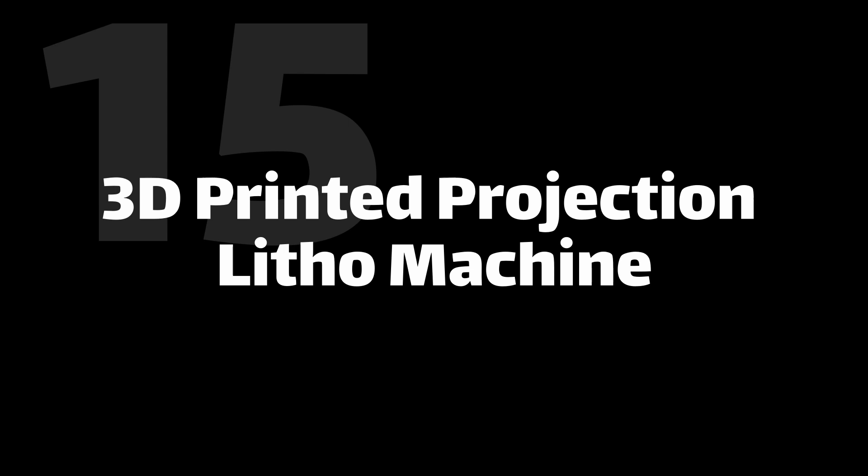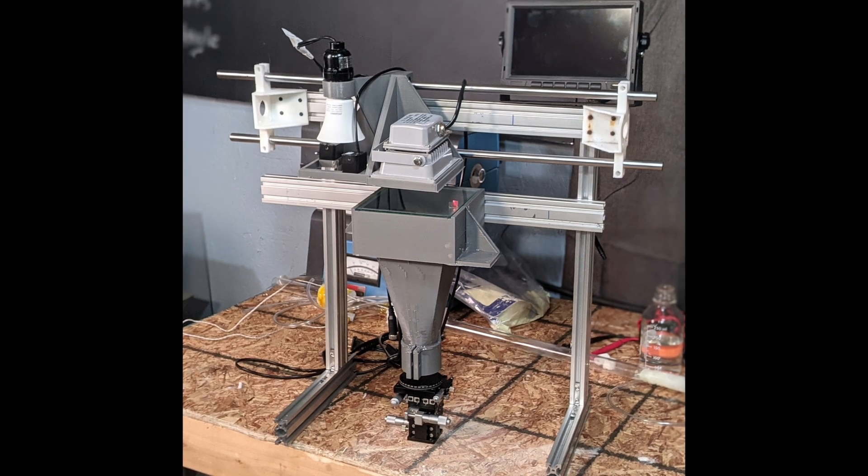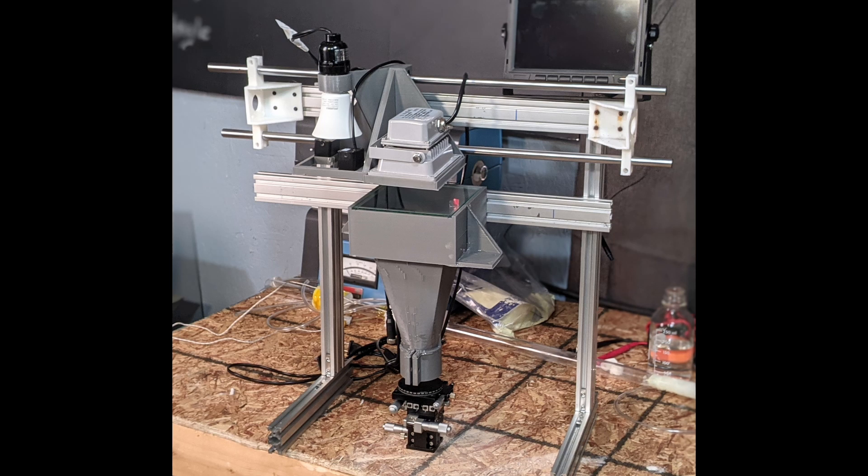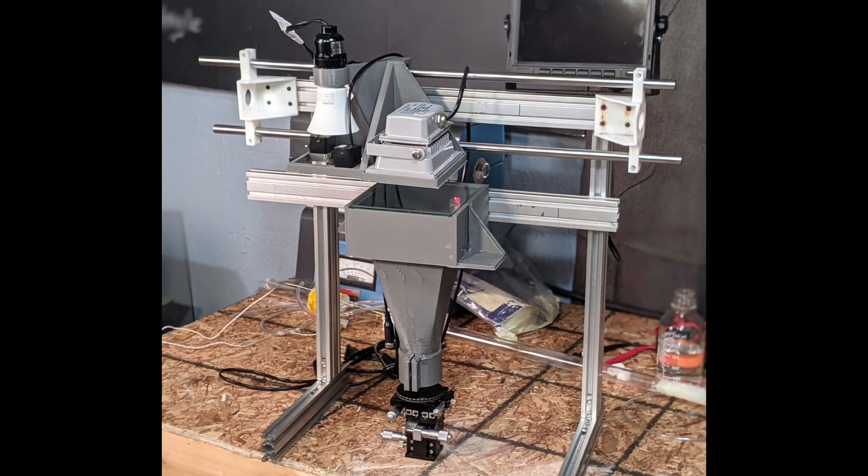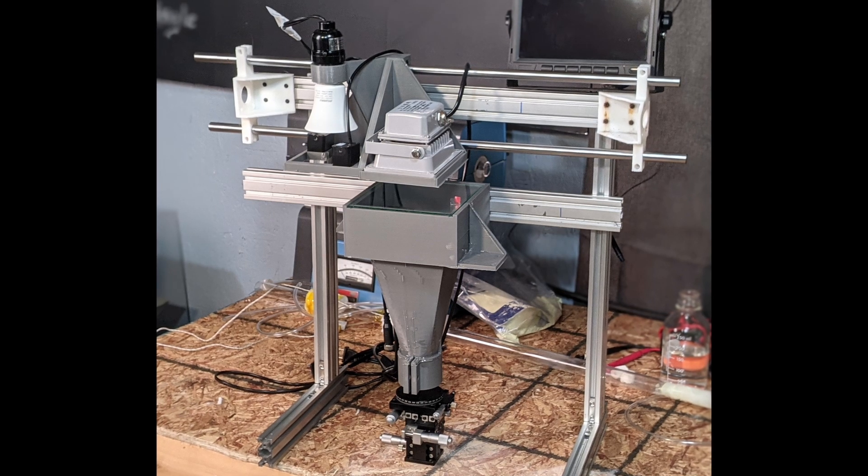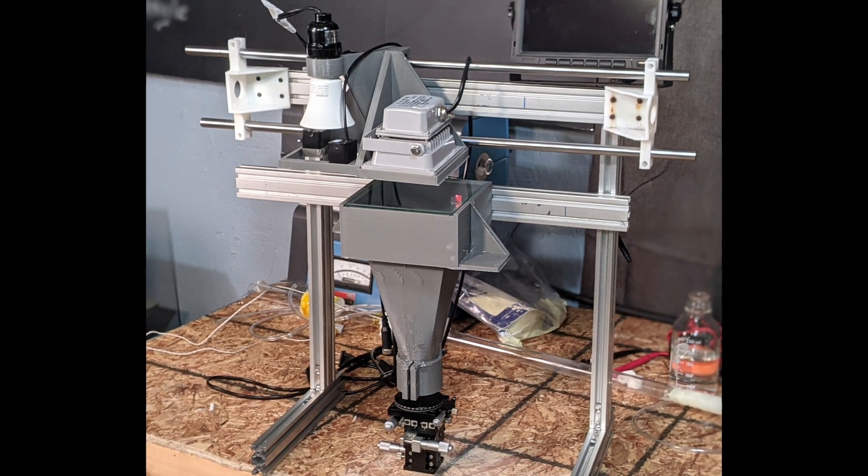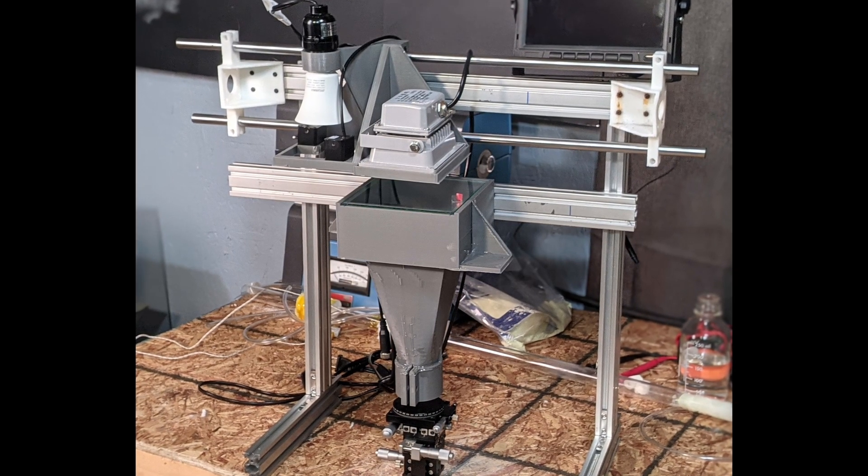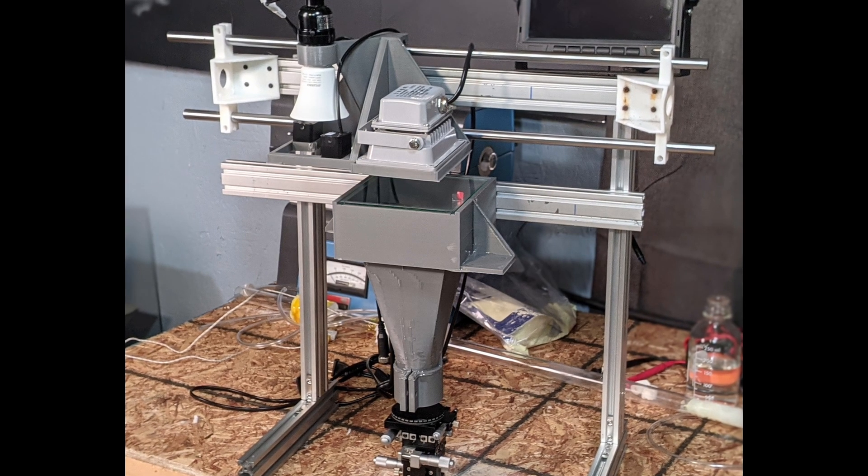Before I started working on the direct write laser lithography machine, I was actually working on just a more traditional projection lithography machine. It's a bunch of 3D printed components and aluminum extrusion. The idea is that you have some type of mask at the top surface on that glass plate and it's projected down through a series of lenses onto your substrate. Pretty straightforward. I never got this quite working because I got distracted by the direct write laser system, and that ended up working first so that's what the video was about.